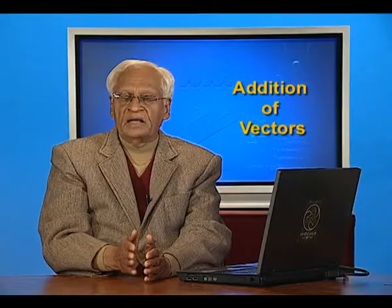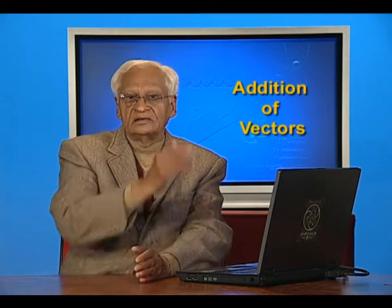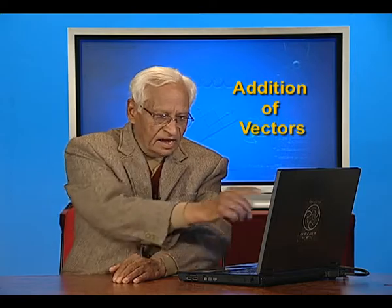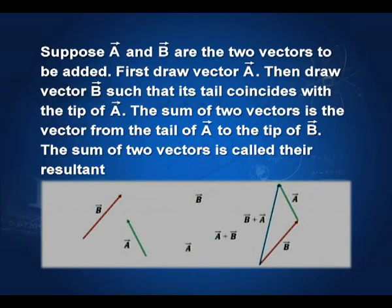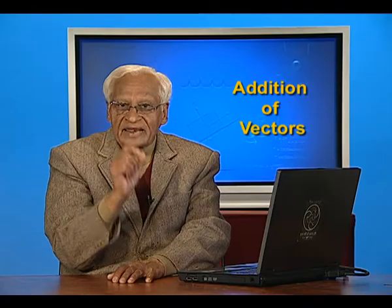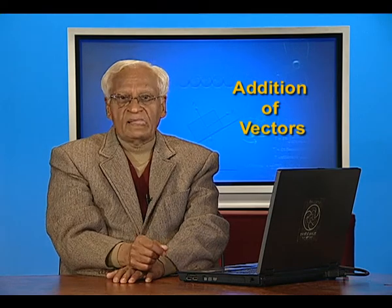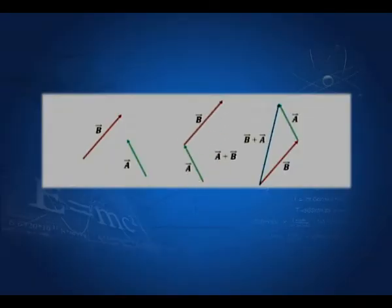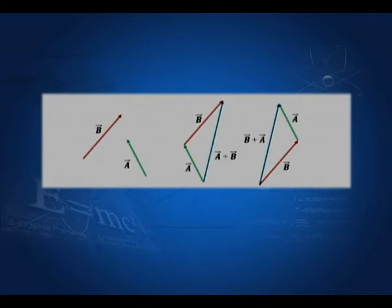When I want to add two vectors, I place the tail of one vector at the head of the other vector. This is vector A — it is parallel to A and has the same magnitude. I want to add vector B to it, so I place the tail of vector B at the tip of vector A. Then I draw a vector between the tail of vector A and the tip of vector B. This is called the sum of two vectors, A plus B.